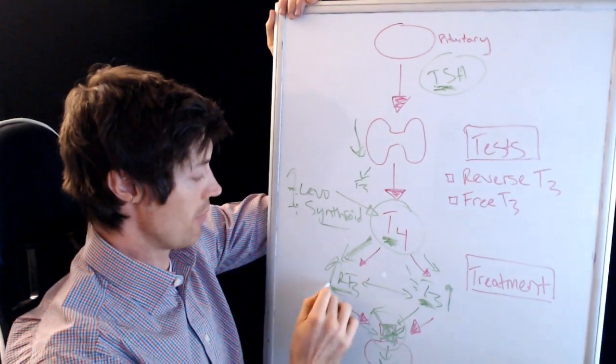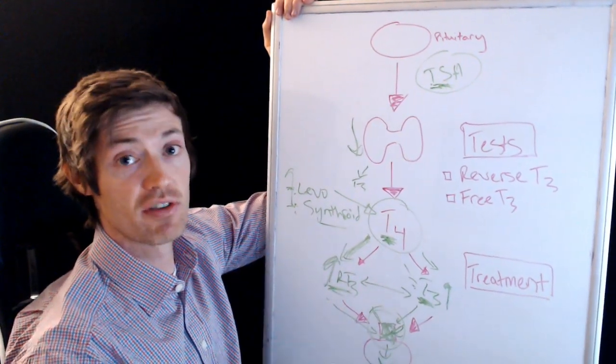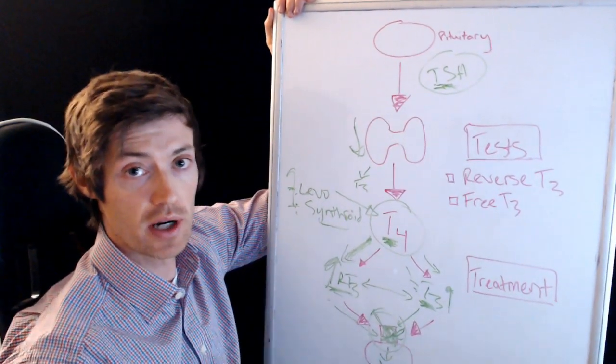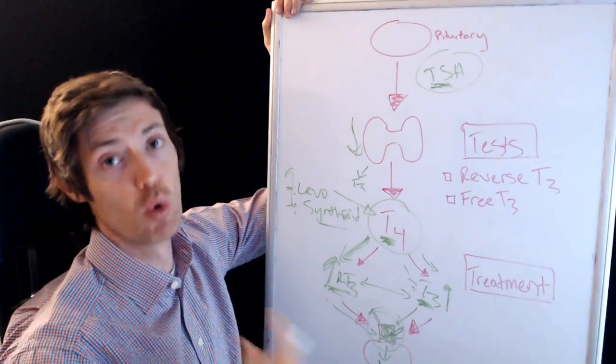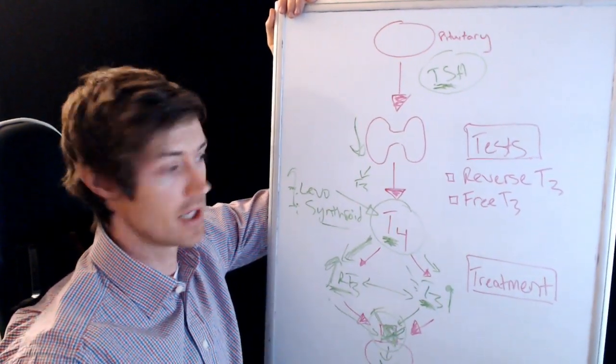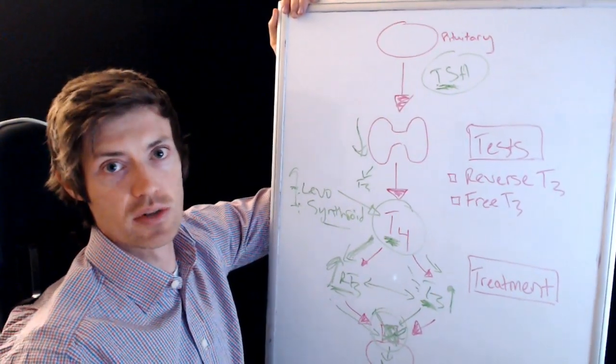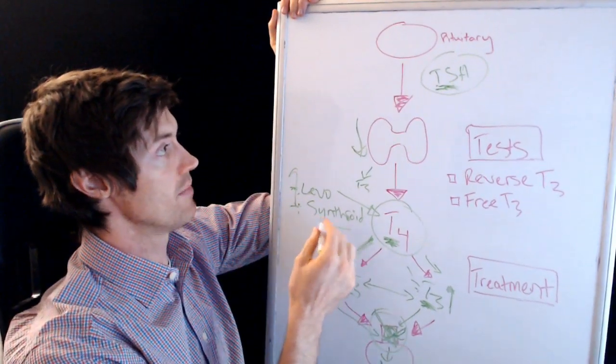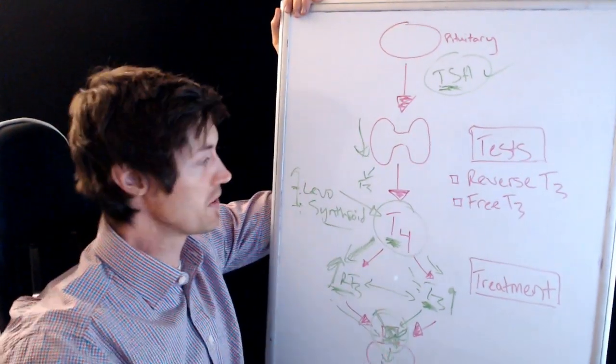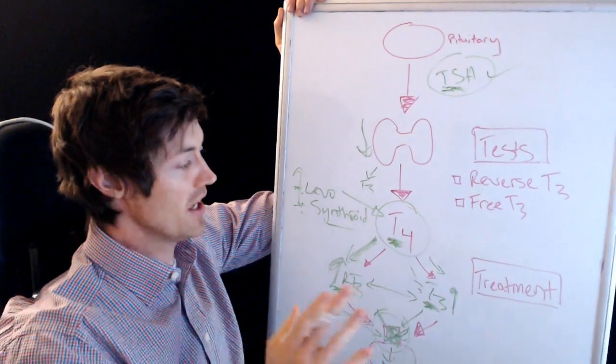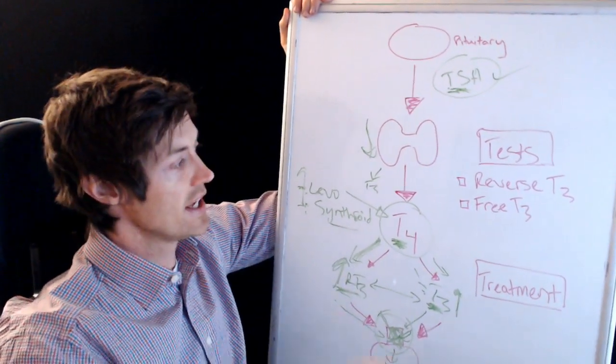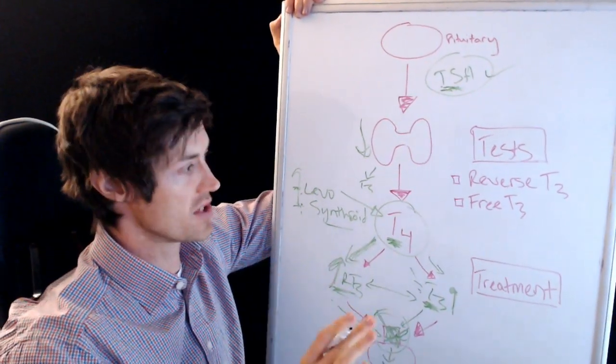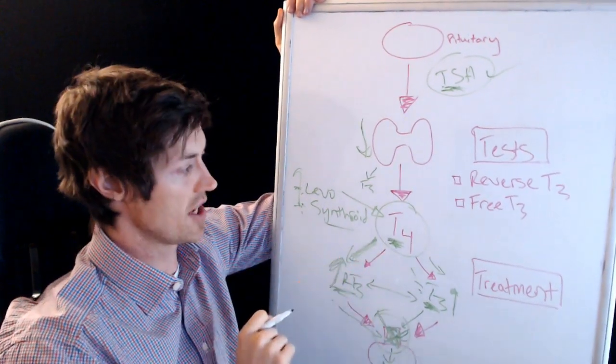Remember, as reverse T3 gets higher and higher, you're going to feel more hypothyroid. So you'll have more weight gain, you'll have more fatigue, you'll have more muscle pain, you'll just continue to feel worse and worse and worse. Meanwhile, your doctor will be saying, hey, but your TSH is normal, so you must be fine. That's definitely not how it occurs. So that's how this can all occur. Yes, there's a couple other things. I'm going to leave those out because I want to just illustrate it. It's easier to think about it in this way.